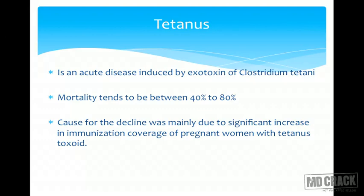Tetanus is an acute disease caused by the exotoxin of the bacteria Clostridium tetani. The mortality tends to be very high — in the range of about 40 to 80 percent. The cause of decline was mainly because of significant immunization coverage in pregnant females.